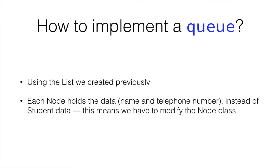So how to implement the queue? We are going to use the list we've created previously, whereas we're going to change the node to hold the data that we're holding in this case—the name and the telephone number—instead of the student data.